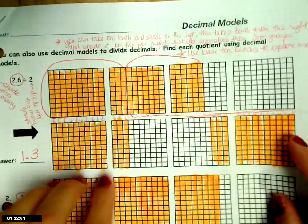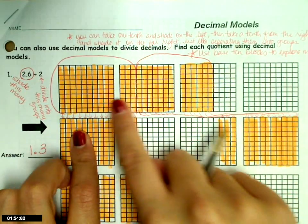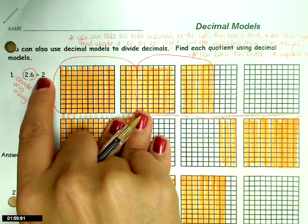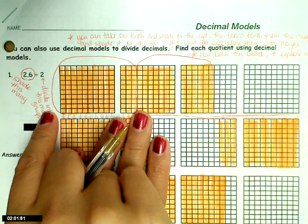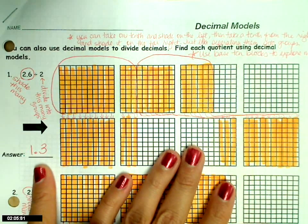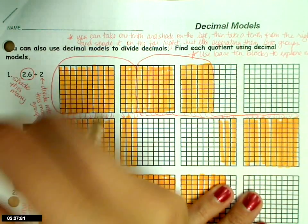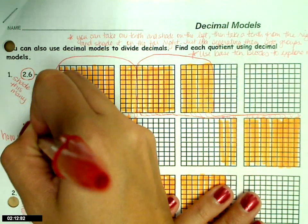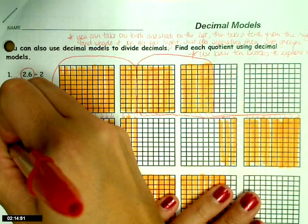Now before, you had problems like this, that you shaded your 2 and 6 tenths. But then this number, because it's a number bigger than 1, it's going to tell you how many groups I have to divide it in. And my answer ended up being how many in each group. So how many in each group? And you can write that in your paper too.